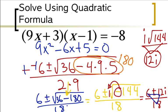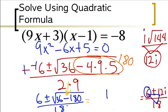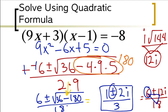My final answer: 6 divided by 6 is 1 plus or minus 12 divided by 6 is 2i over 18 divided by 6 is 3. This is your final answer: 1 plus or minus 2i over 3. You could also write it as 1 plus 2i over 3 and 1 minus 2i over 3.